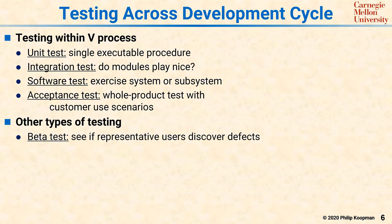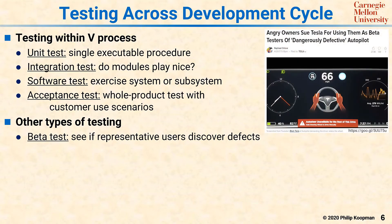There are other places where testing shows up, and they have their own uses. Beta test, for example, is supposed to see if representative users discover defects. Now this test gets abused. A lot of times people take software which might not be fully baked, and they sell it to people and say we'll just call it beta so people know it's not 100%, and then they send it to the public. And that can lead to problems with your public perception of your company.